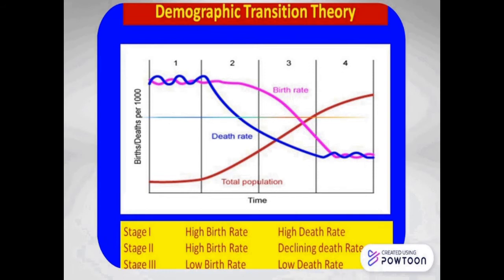We will now move on to the second stage, which is a very important stage. The second stage of demographic transition is characterized by rapid growth of population. This situation arises because of a substantial reduction in the death rate. Improved living standards, food availability, and development in health and hygiene sectors bring down the mortality rate. However, the birth rate remains high due to the attitudes of the people towards family size. This second stage is known for population explosion, where population increases at an alarming rate.